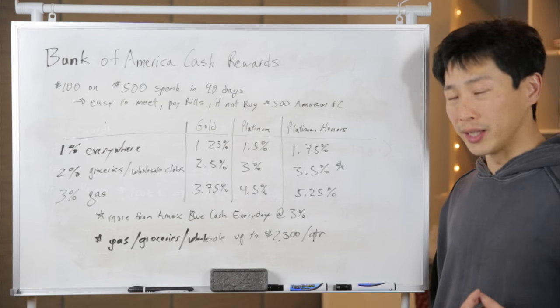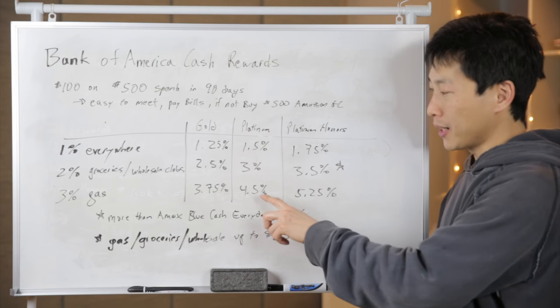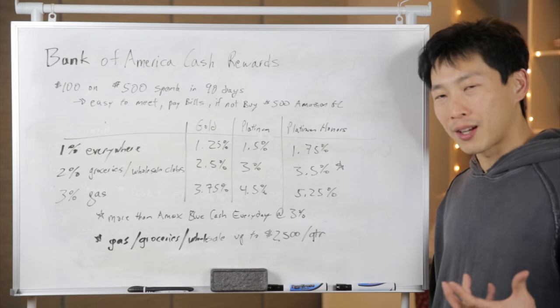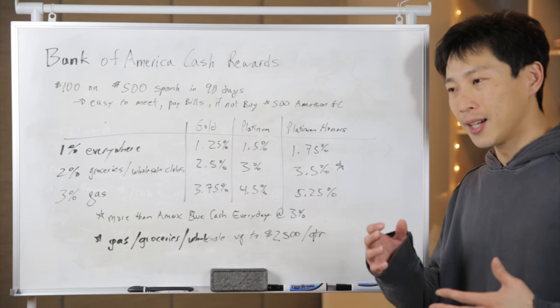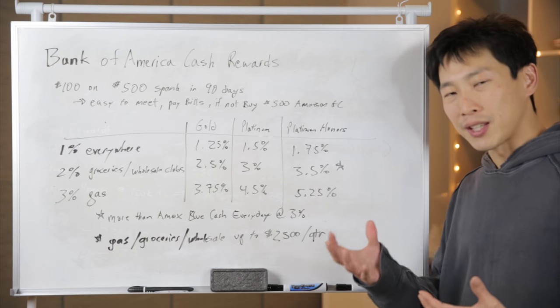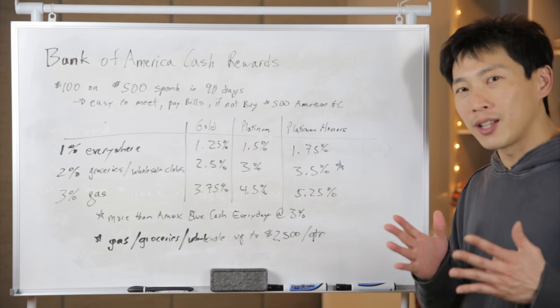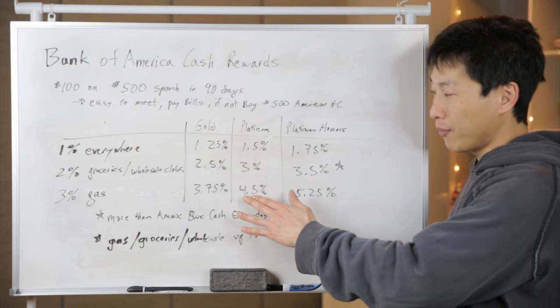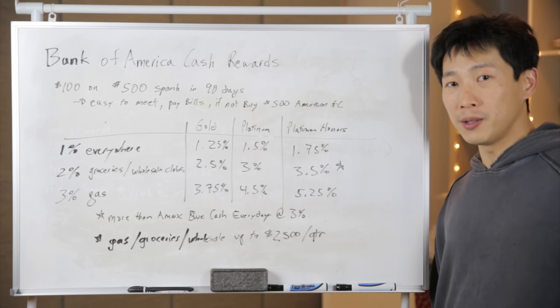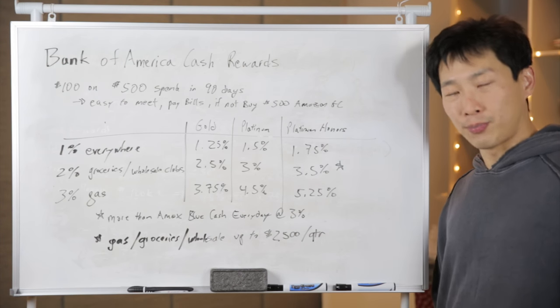It's hard to find a gas credit card that gives you 5% these days. So 5.25% is really good. Even if you're at the platinum tier where you have $50,000 of investable assets divided between investments or a couple thousand in checking and saving, if you add it all up, if it's more than 50,000, then you get 4.5%, which is still pretty good.